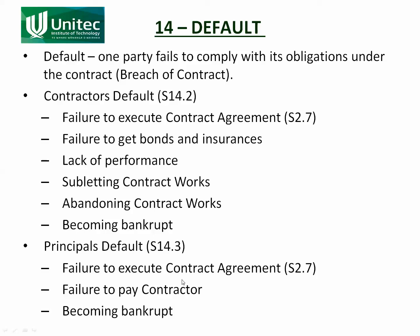Section 14 describes what happens if one of the parties is in default. There is a procedure the engineer goes through to decide how to remedy the problem. If it's lack of performance by the contractor, he may ask the contractor to do it properly and let the contract keep running. Or he may decide the contractor is incapable of fixing the default and terminate the project. Section 14 sets out all the processes he needs to go through, and once he's decided to discharge the contract, how he fixes things up — ensuring the contractor is paid what he's owed and the principal is given the works in a reasonable state.